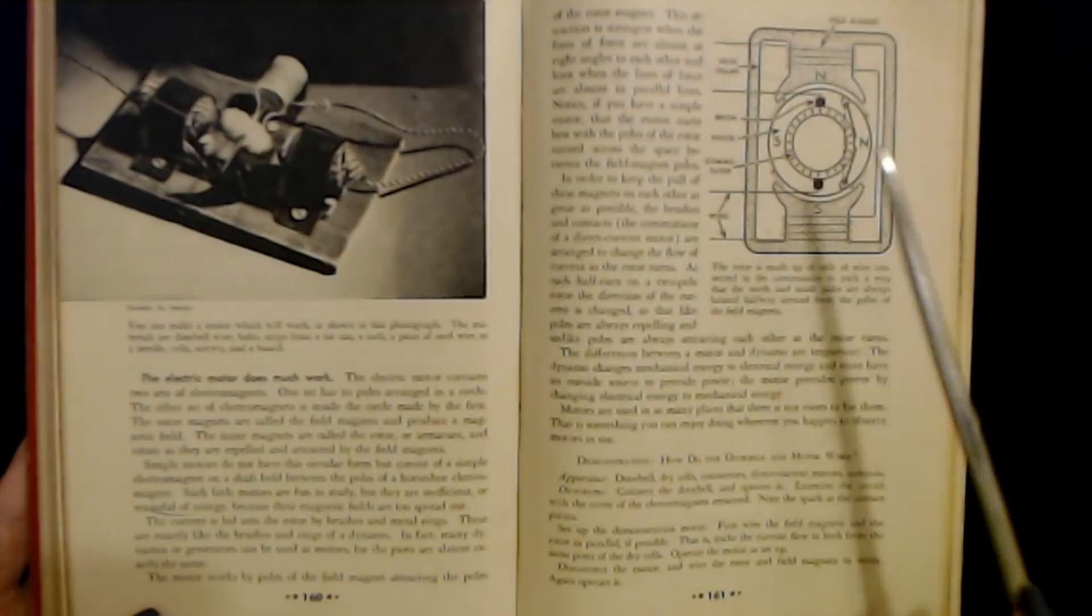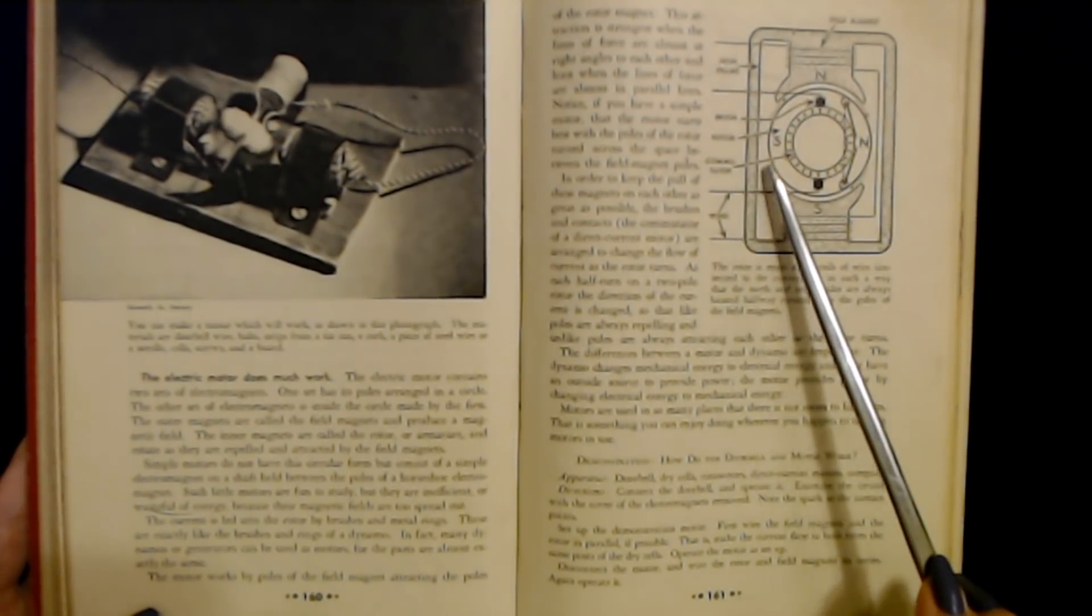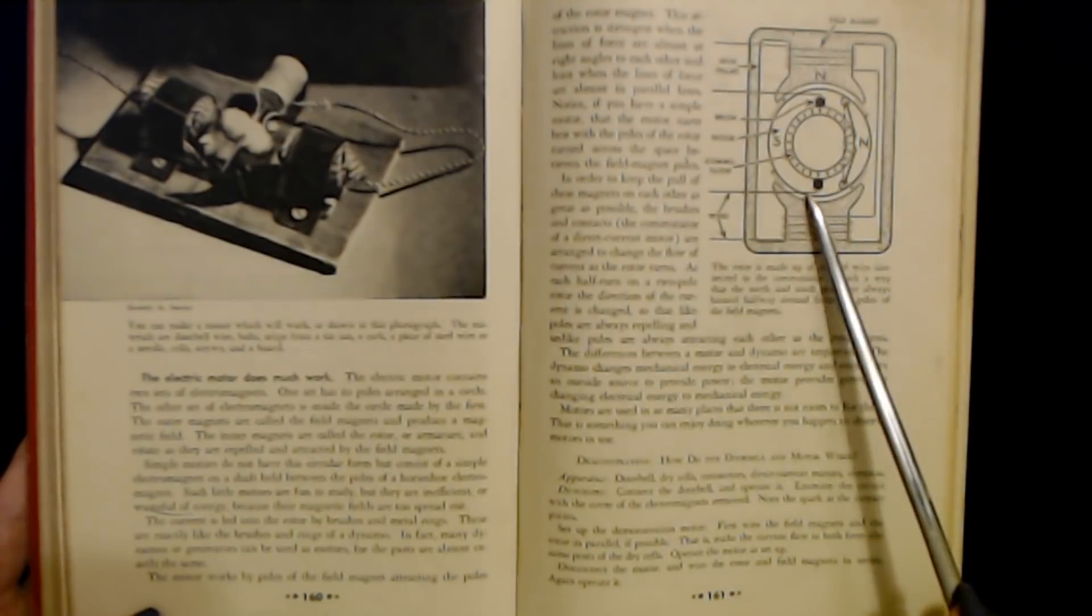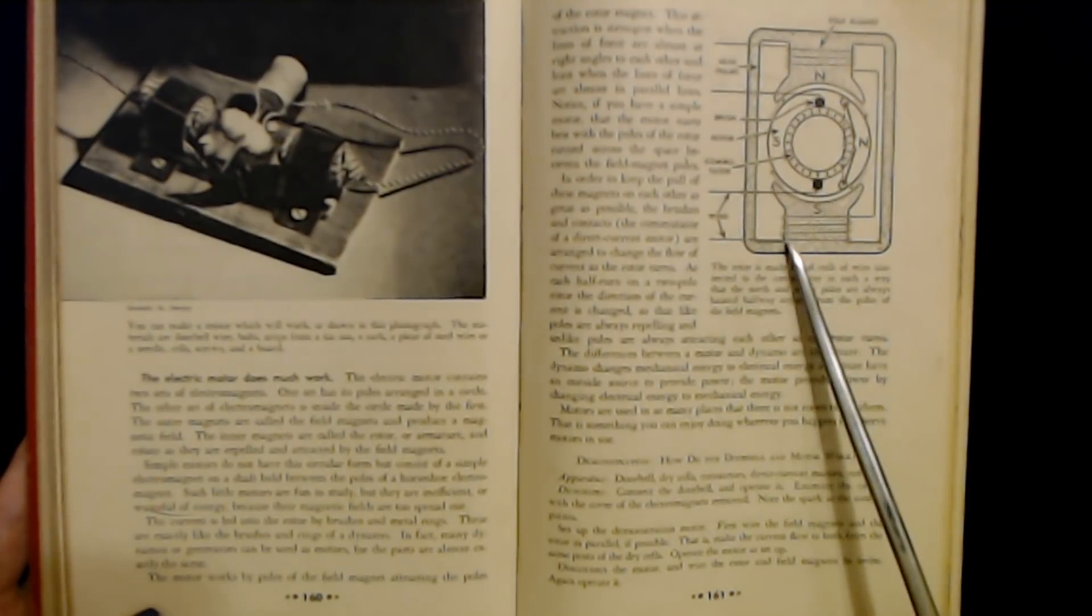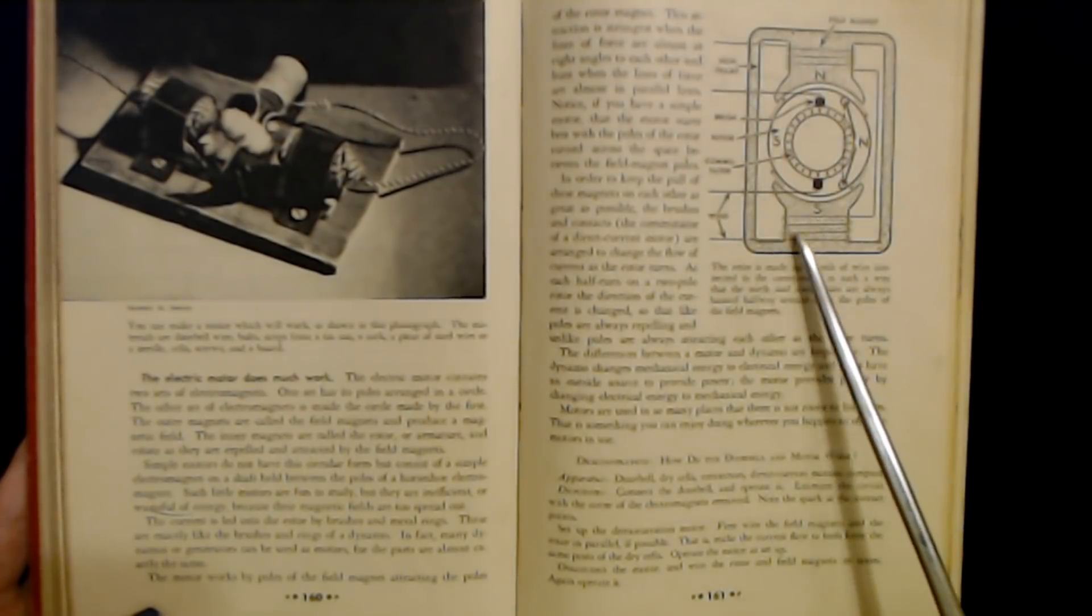The rotor is made up of coils of wire connected to the commutator in such a way that the north and south poles are always located halfway around the poles of the field magnets. You can see that here. Up here appears the brush and the rotor. The commutator is here and the wires right there. The field magnet is up here and then here you have the iron frame.